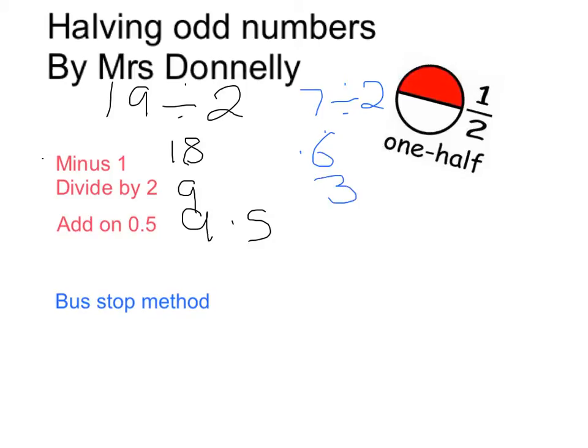2, 4, 6, which is 3, add on 0.5. So 3.5.